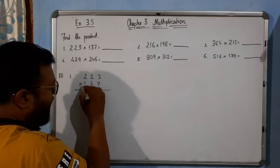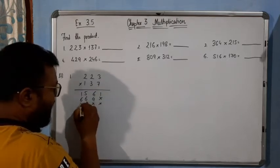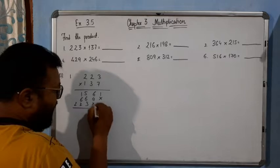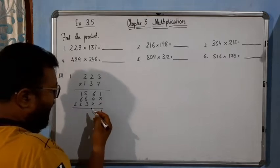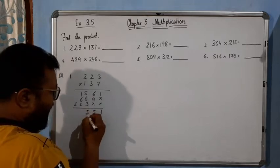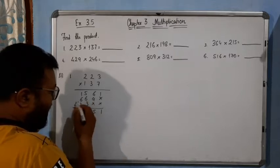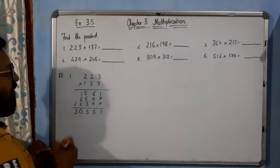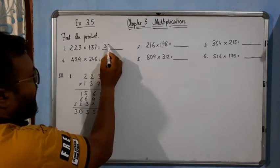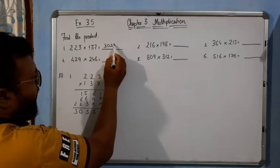Cross mark. Then 3 times 3 is 9, 3 times 2 is 6, 3 times 2 is 6. Double cross. Then 1 times 3 is 3, 1 times 2 is 2. Now adding: 1, 5 carry 1, 5 carry 1, 0 carry 1, 3, 0, 5, 5, 1. So answer will be 30551.